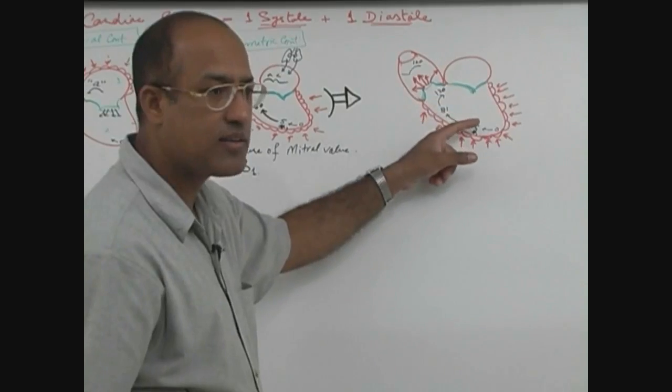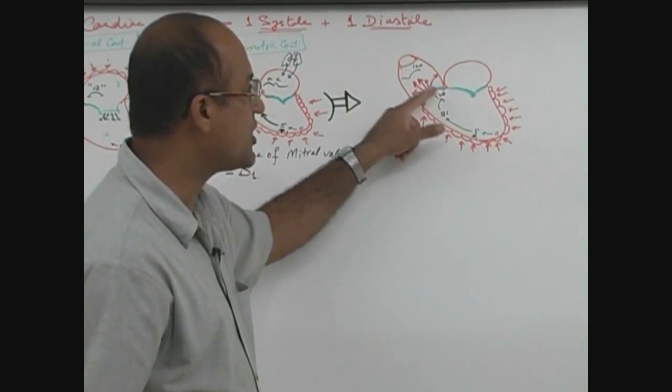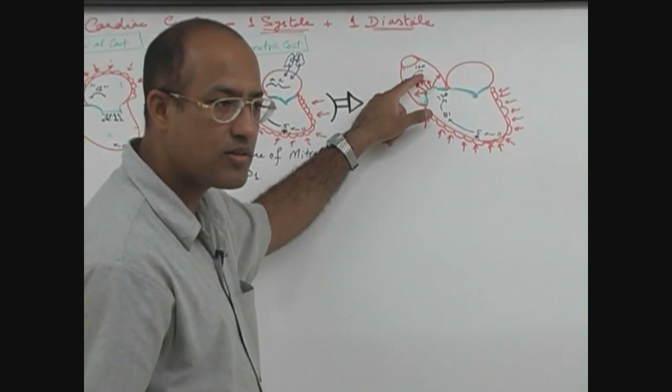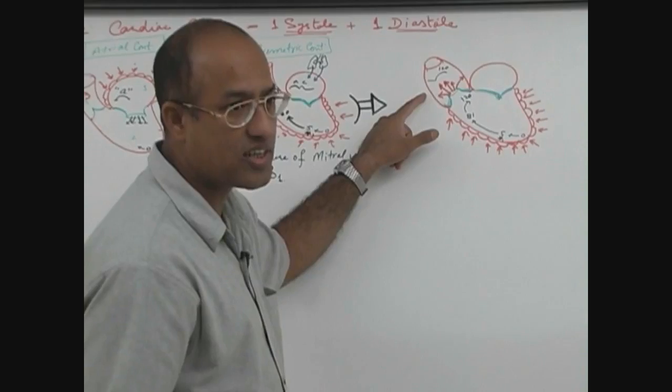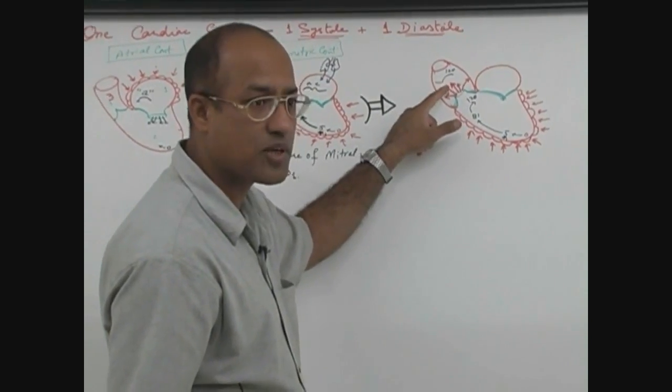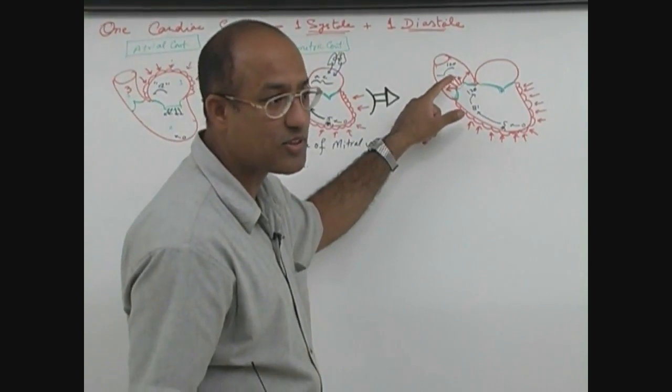We have already discussed what is happening in ventricle - ventricular pressure has become more than aortic pressure, so aortic valve is open and blood is being ejected rapidly from the ventricle into aorta.